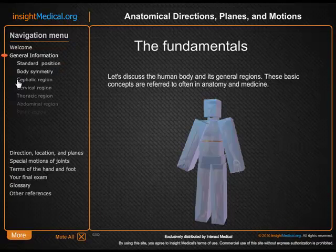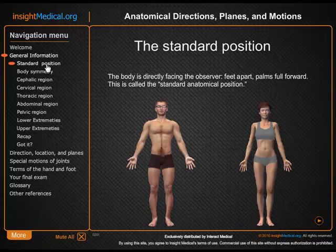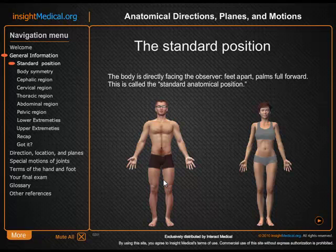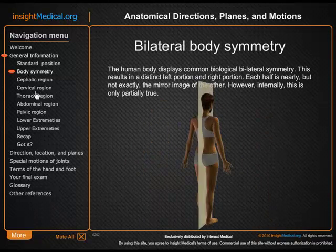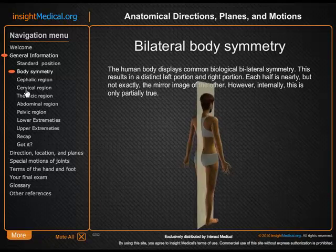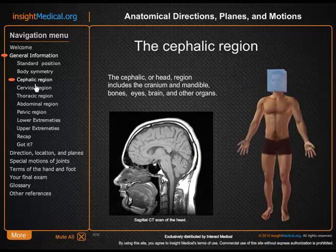It begins with general information, talking about the standard anatomical position for a man and woman, and then body symmetry, bilateral symmetry, and then goes into the different regions of the body.